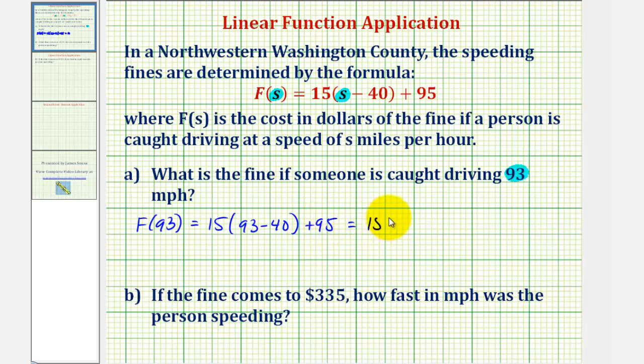Which is equal to 15 times, this difference is 53, plus 95. Well, 15 times 53 is equal to 795. So 795 plus 95 is equal to 890, which means the fine is 890 dollars if the person is caught driving 93 miles per hour.